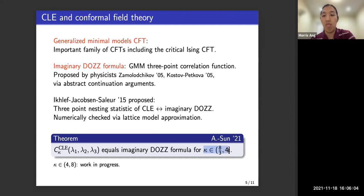So we proved it for this regime when kappa is between 8/3 and 4. This is a simple loop regime for CLE. For the non-simple loop regime, where kappa is between 4 and 8, this is work in progress.